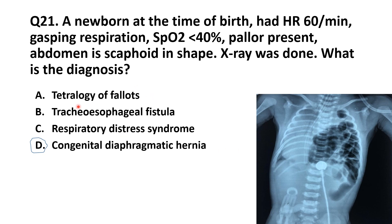Now see the other options. In tetralogy of Fallot, the newborn will have presentation after 6 months of life, except when pulmonary atresia is present — in that case they can present in the newborn period. Cyanosis and respiratory distress can be there.